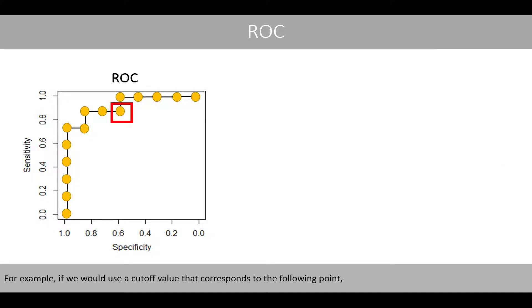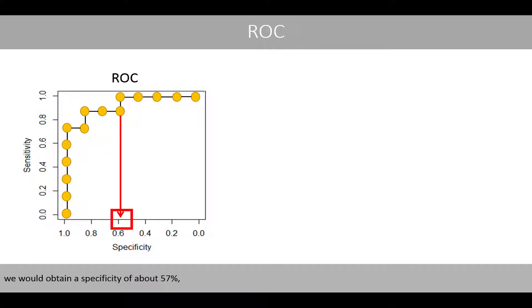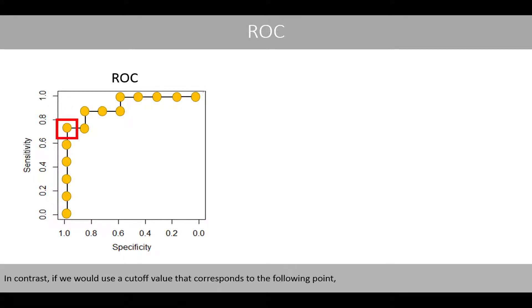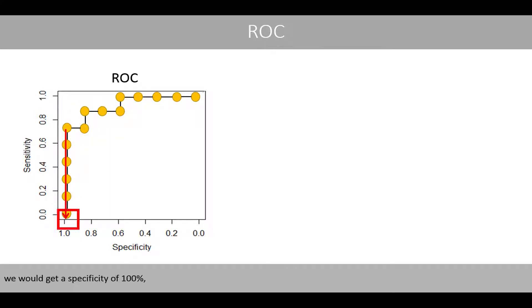For example, if we use a cutoff value that corresponds to the following point, we would obtain a specificity of about 57% and a sensitivity of about 86%. In contrast, if we use a cutoff value that corresponds to the following point, we would get a specificity of 100% and a sensitivity of about 71%.